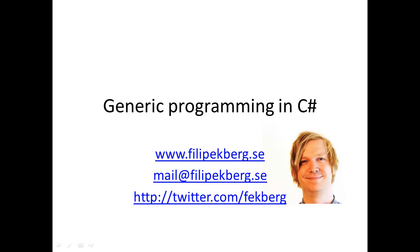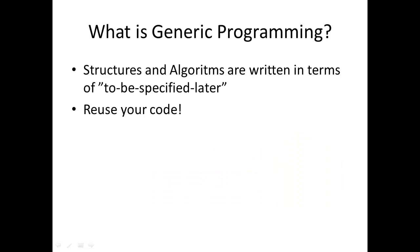Hello guys, this is Filip and today I'm going to talk to you about generic programming in C#. So what is generic programming? Basically it's when structures and algorithms are written in terms of types to be specified later, and this means that you create your algorithms with types that you don't always know when you create your structures or algorithms.